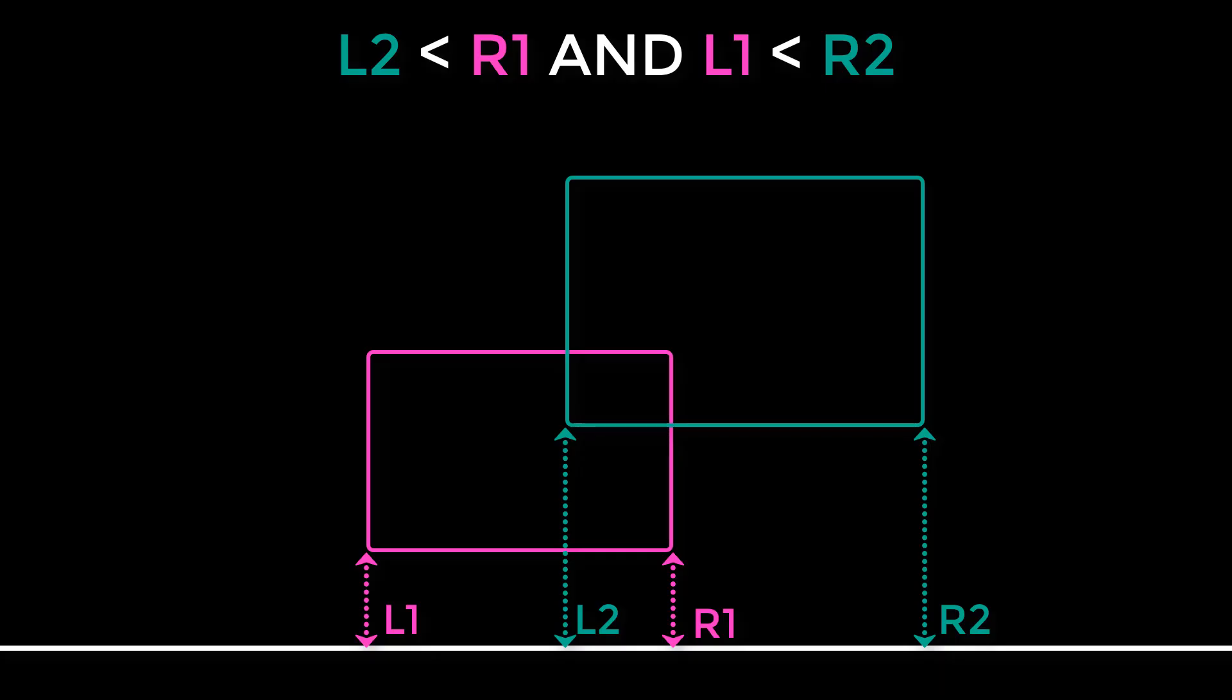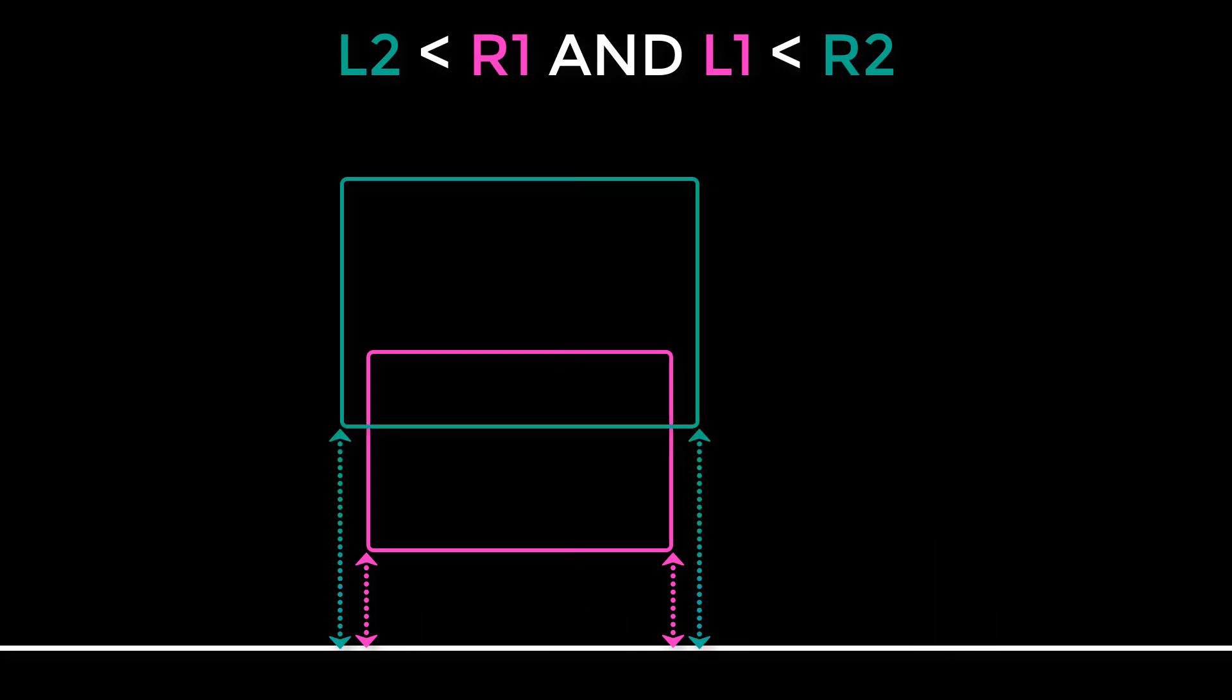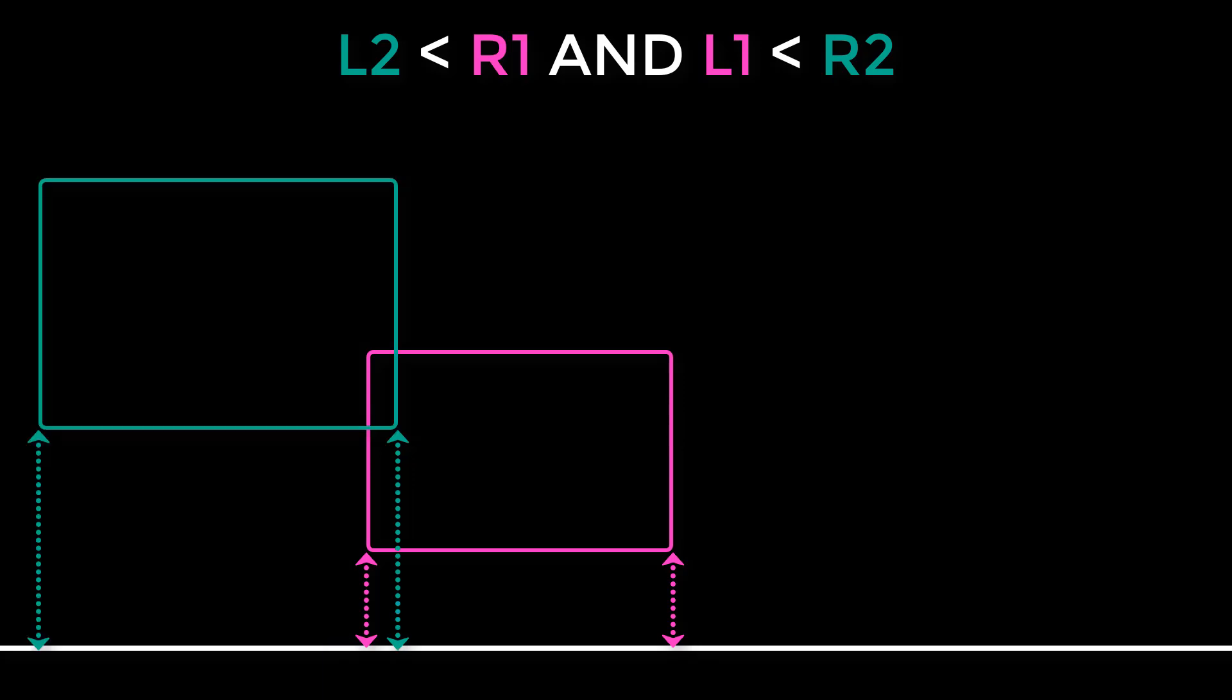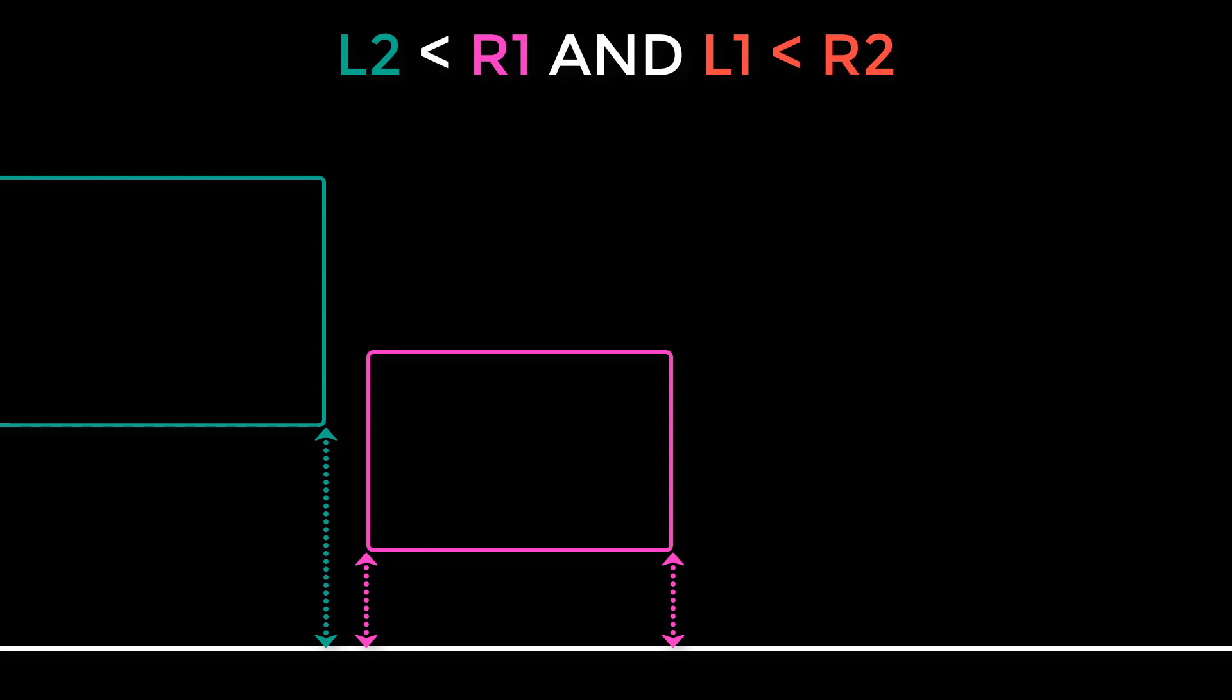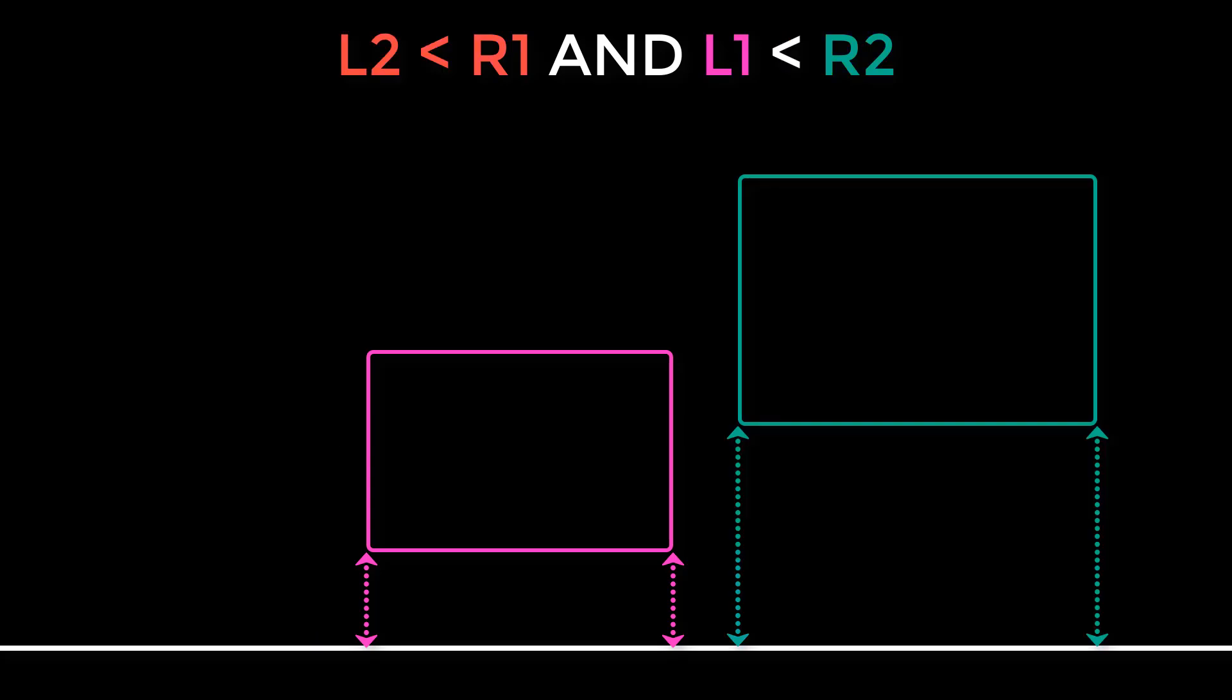So this works no matter where these boxes are. Like the boxes could be positioned like this, or they could be overlapping, and that condition is still true. Or they could be colliding on the other side, and the condition is still true. But if you go a little further, now L1 has become greater than R2, and so the boxes are no longer colliding. And if we move the teal box to the other side, now L2 has become greater than R1, and again, the boxes are no longer colliding.